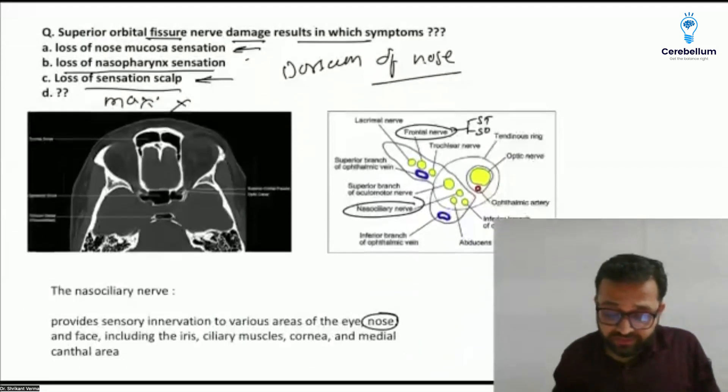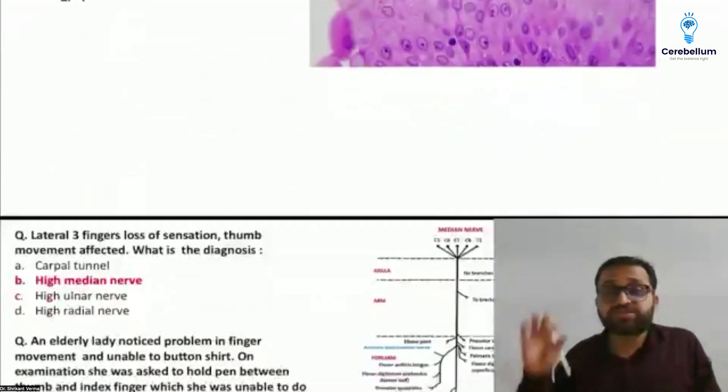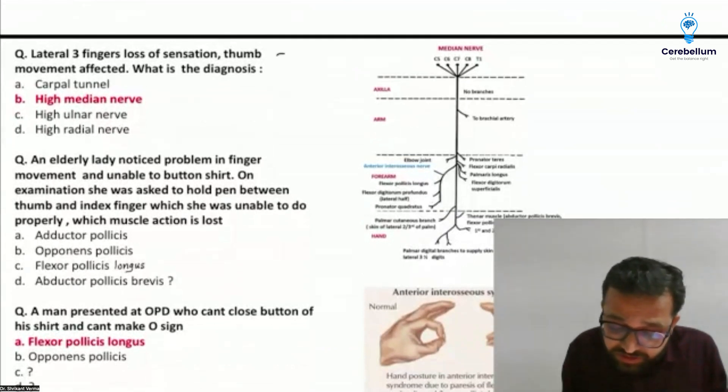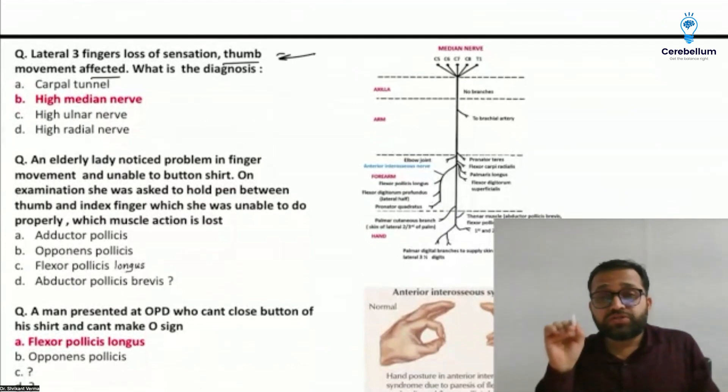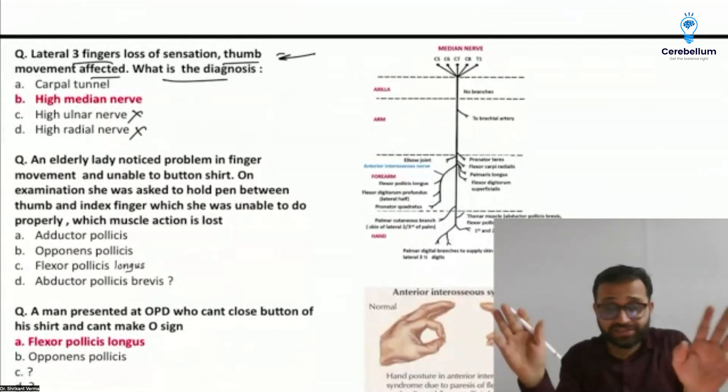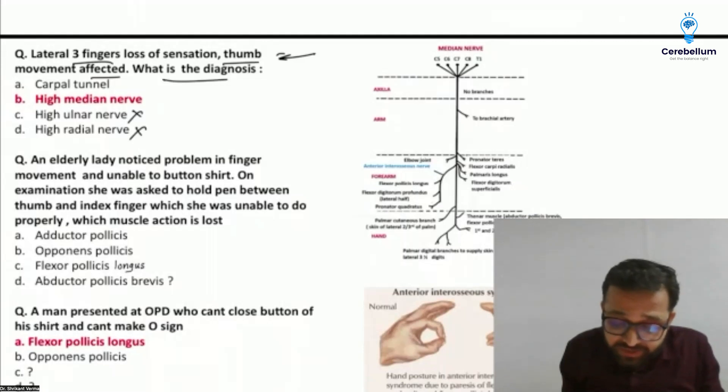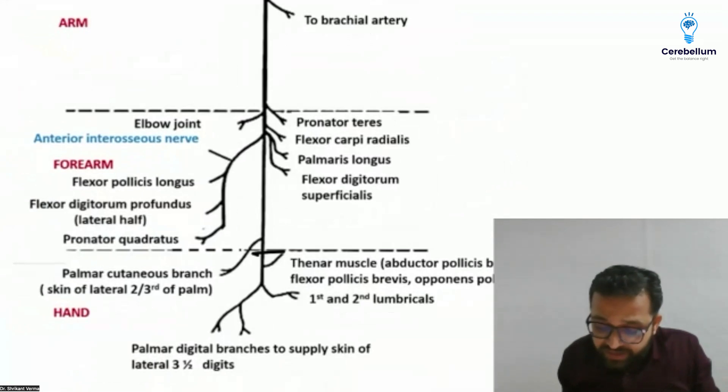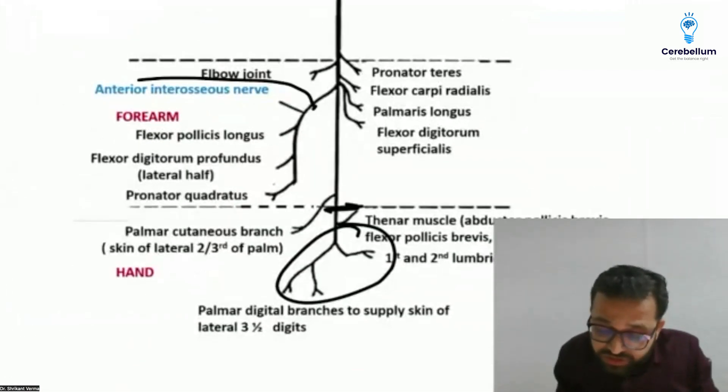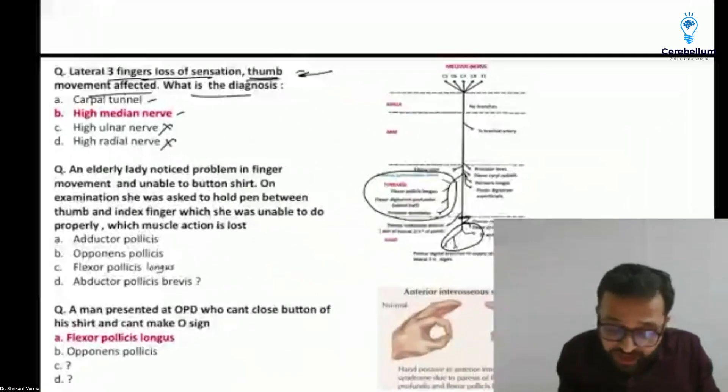Again there are three questions. Three questions as I told you, upper limb nerve injury is important. Lateral three fingers loss of sensation, thumb movement affected - what is the diagnosis? In this condition ulnar nerve is not there because lateral three fingers. High radial nerve - no, radial nerve is the nerve of the posterior compartment of the arm as well as the forearm. Carpal tunnel may be in high median nerve injury. If there is carpal tunnel syndrome, muscles are paralyzed, but here he is saying three finger loss and thumb movement is affected. Thumb movement is only affected when the anterior interosseous nerve is affected, so answer will be the high median nerve injury.